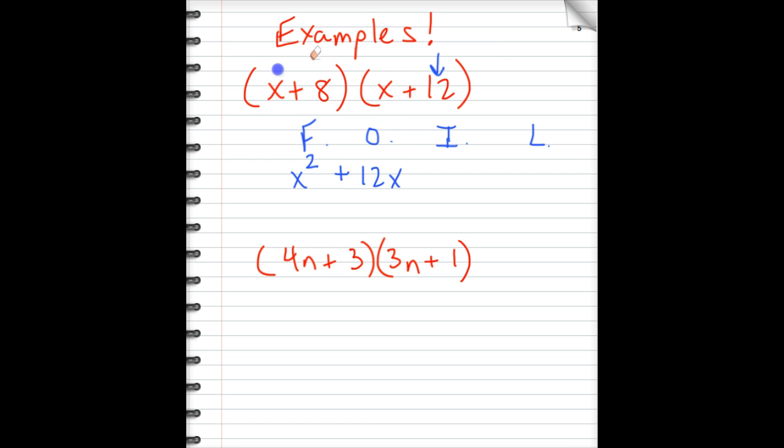Next, we'll look at the inside terms. The inside terms are the ones closest together. They're almost touching in the middle. Those are your inside terms. If you multiply those in this example, 8 times x is positive 8x. And then finally, L stands for last. That's the last term or the second term in each parenthesis, which namely in this one, you have 8 times 12, which is a positive 96.